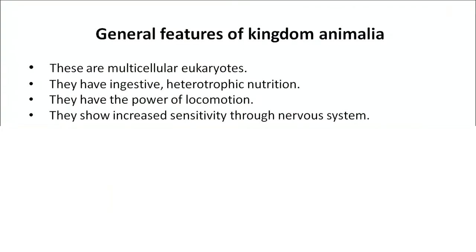These are multicellular eukaryotes — that is, they contain a nucleus and organelles and are enclosed by a plasma membrane. They have ingestive, heterotrophic nutrition, meaning the process of absorbing nutrients. They have the power of locomotion and show increased sensitivity through nervous systems.